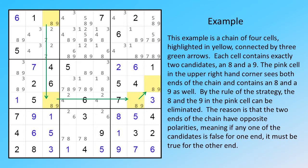The pink cell in the upper right-hand corner sees both ends of the chain and contains an eight and a nine as well.